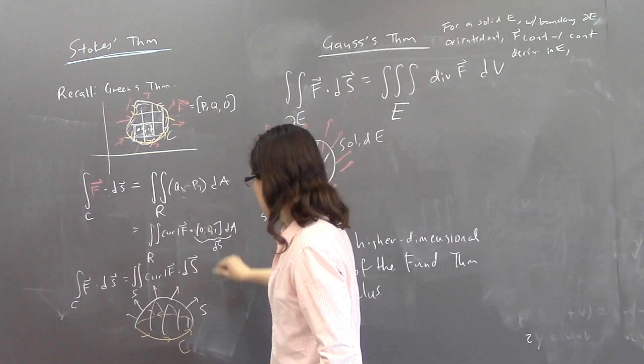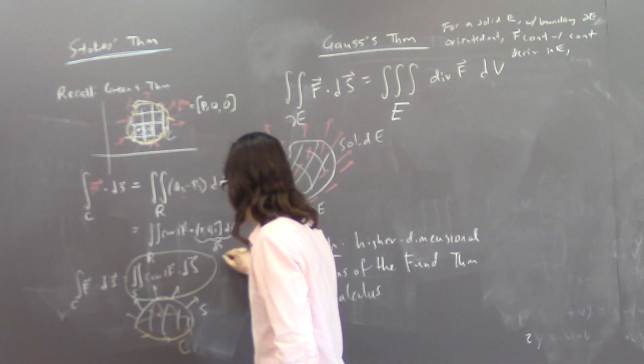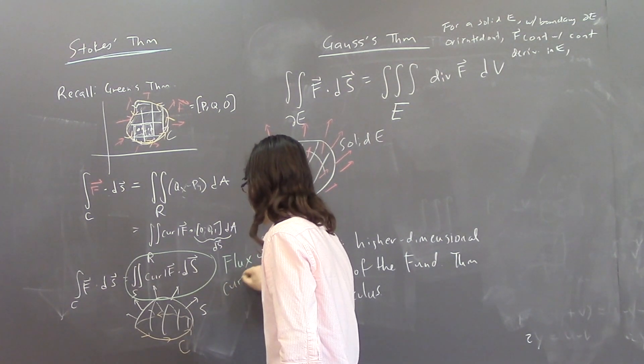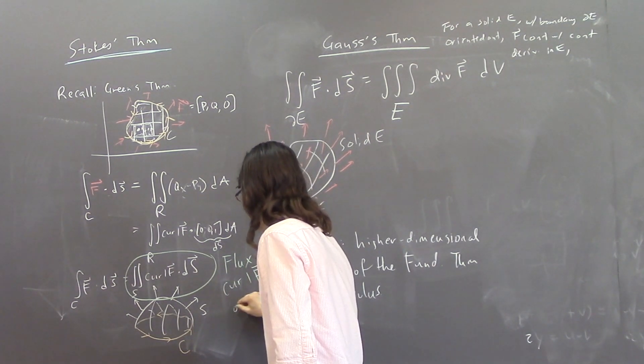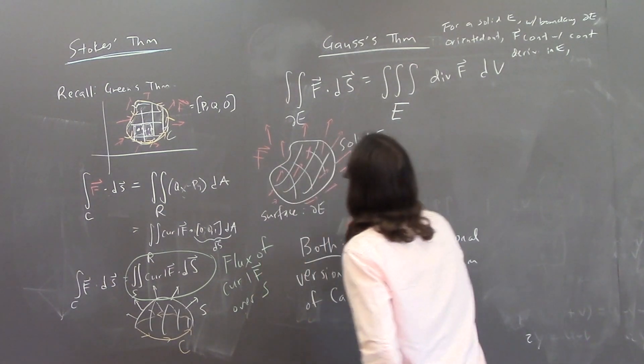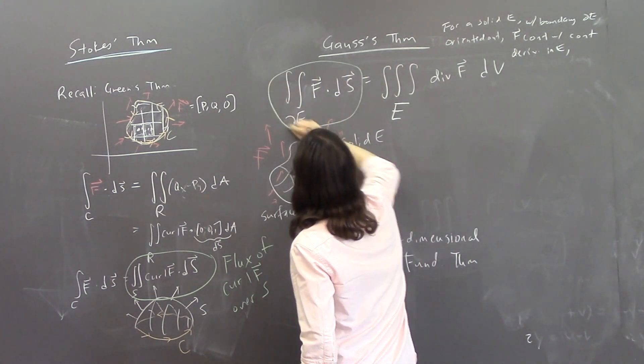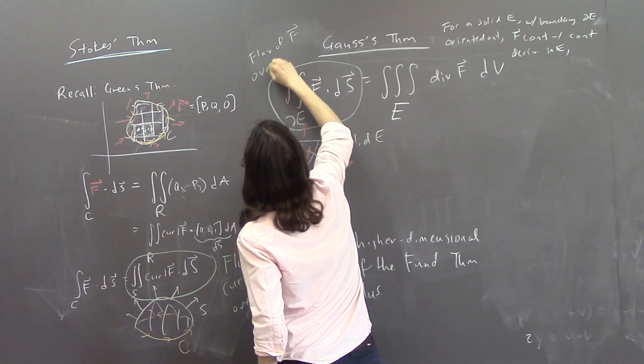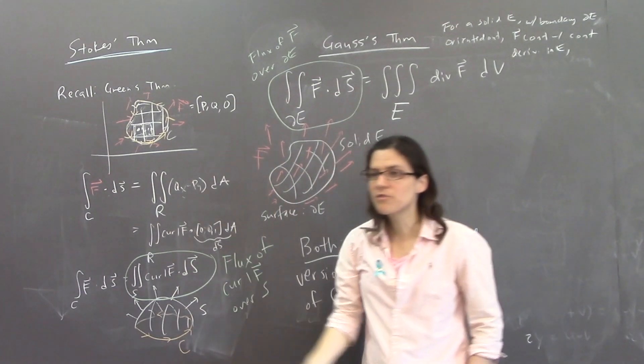so flux is a word for the number that you get when you compute a vector surface integral. Oh, okay. So this, this right here, this is, like, flux of the vector field curl F over S.